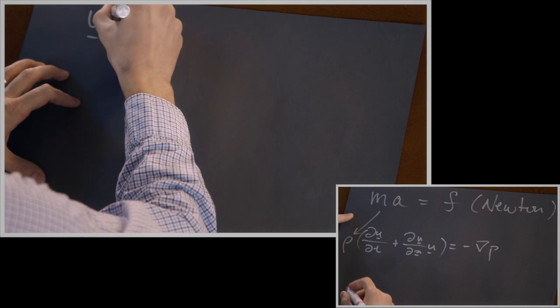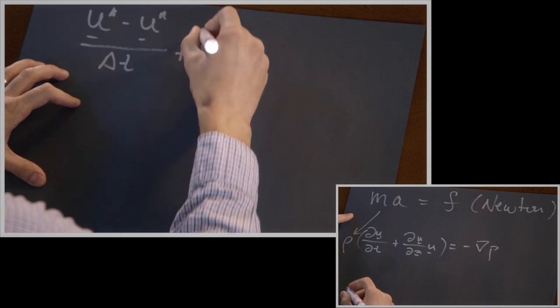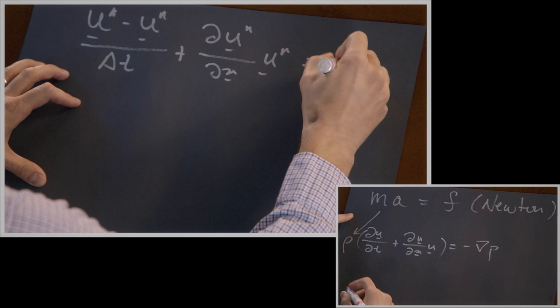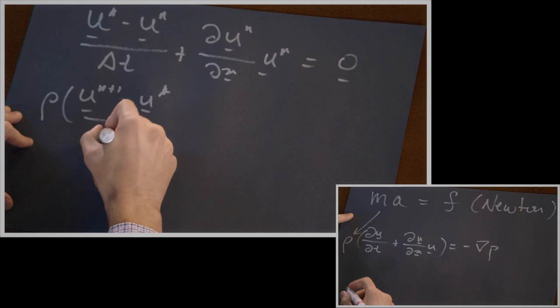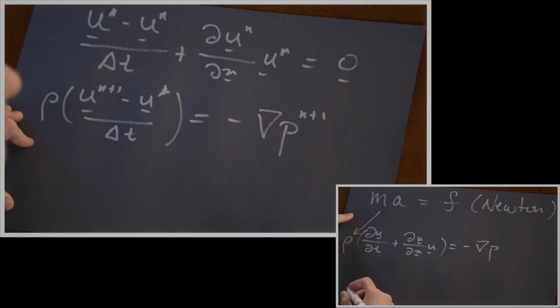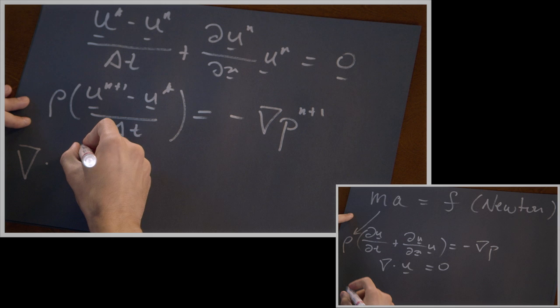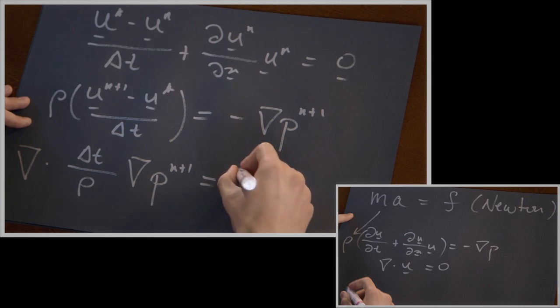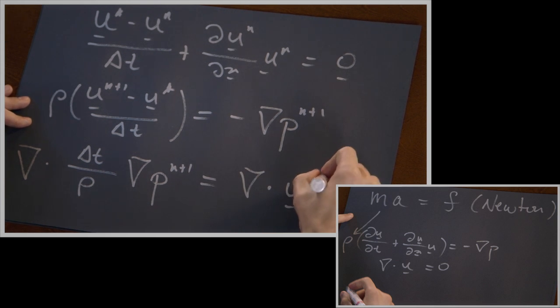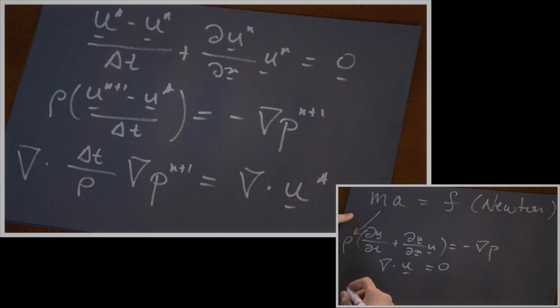I'll talk about how we solve the fluid equations, and specifically how we derive a Poisson equation for the pressure that ends up being the main bottleneck in these simulations. We split the fluid equations into two stages. The first is an advection stage where we ignore the pressure temporarily. In the second phase, we reintroduce the pressure to satisfy the incompressibility constraint. We take the divergence of the equation and require that the divergence of the time n+1 velocity be zero. This gives a Poisson-type equation for the pressure that balances the divergence from the intermediate velocity. We can then solve this using well-known Poisson techniques for complicated domains.